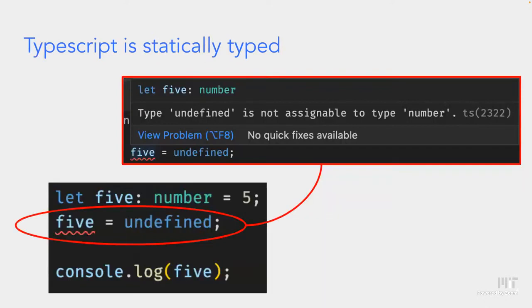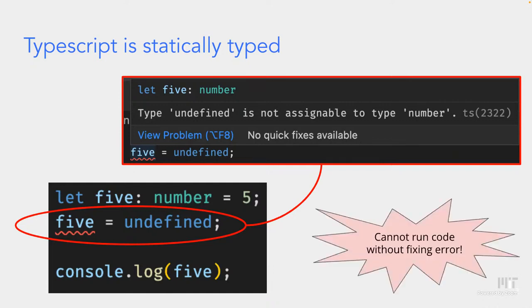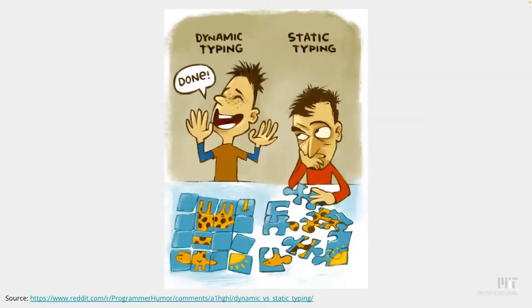Dynamic typing allows for fast programming because you don't have to declare what type you want a variable or function to be. JavaScript is designed to be a fast language. But if we want to be safer — to make sure 'five' is always a number — we use TypeScript. With TypeScript, we declare that 'five' has to be of type number, so when we try to reassign it to undefined, TypeScript throws an error and we can't even compile the program. Dynamic typing is like assembling a puzzle very quickly but with pieces out of place; static typing takes longer but ensures everything fits correctly.